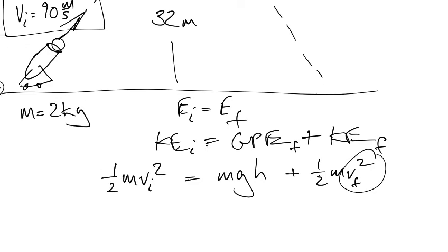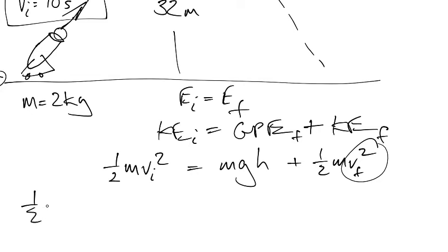So let's solve algebraically. First, one half m v_initial squared minus mgh. And now we're going to solve for v_f. So we're going to multiply. Now, this is equal to, obviously, one half m v_final squared.